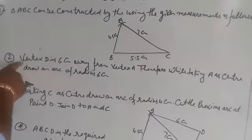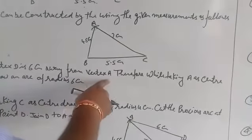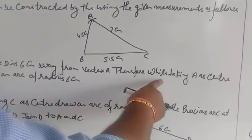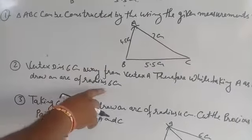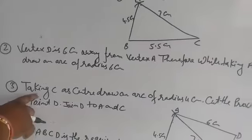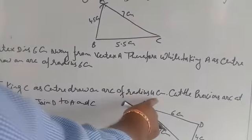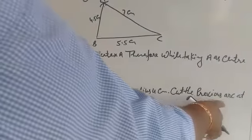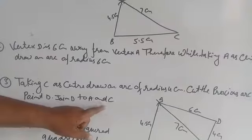Second, Vertex D is 6 cm away from Vertex A. Taking A as center, draw an arc of radius 6 cm. Third, taking C as center, draw an arc of radius 4 cm to cut the previous arc at point D.